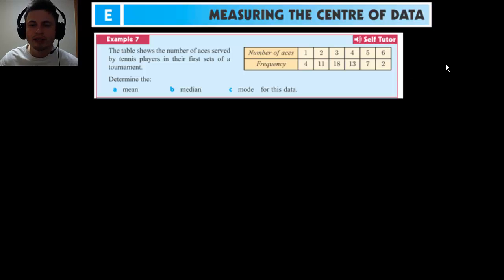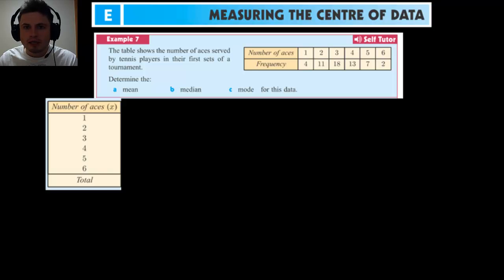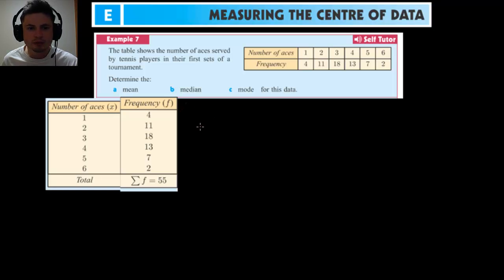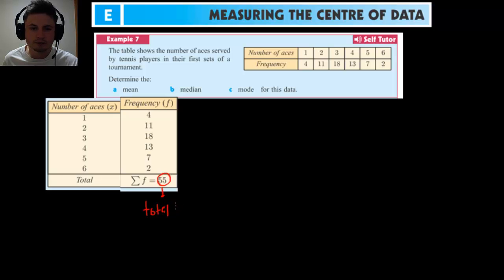Basically it's kind of like working backwards. The easiest way is to use the table already given and come up with an easier way of interpreting it. We'll rewrite the number of aces in a column — so one is here, two is here, three is here — and then rewrite our frequencies. At the bottom, write the total sum of frequencies, which gives you the total number of values, also known as n.